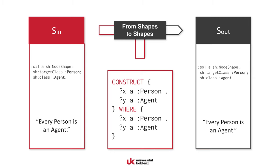Our algorithm constructs the appropriate set of shapes — a single shape stating that a person must be an agent. Of course, output shapes are not always equal to or even a subset of input shapes. Entirely new shapes can arise due to the construct template, which may be different from the where clause in more complex examples.